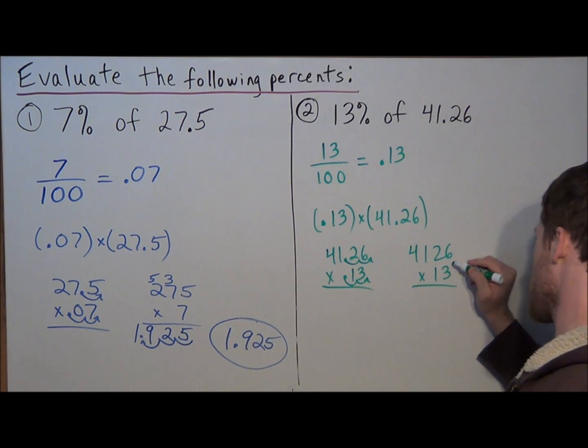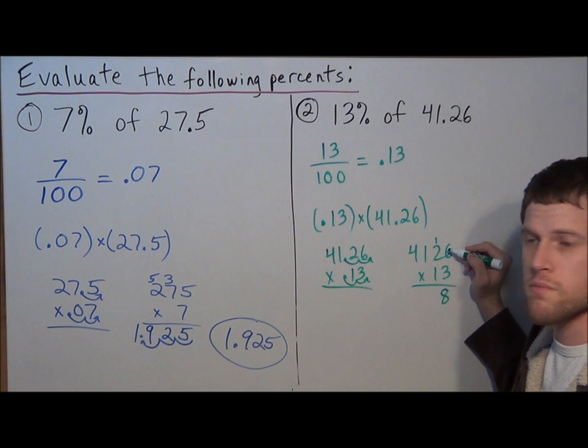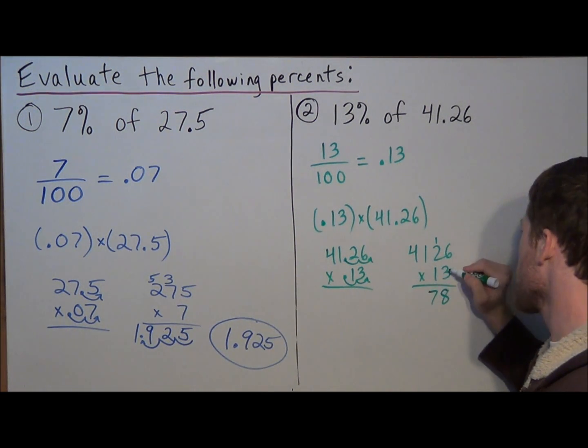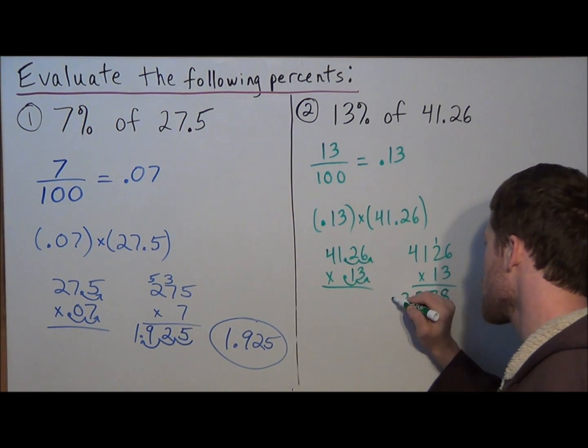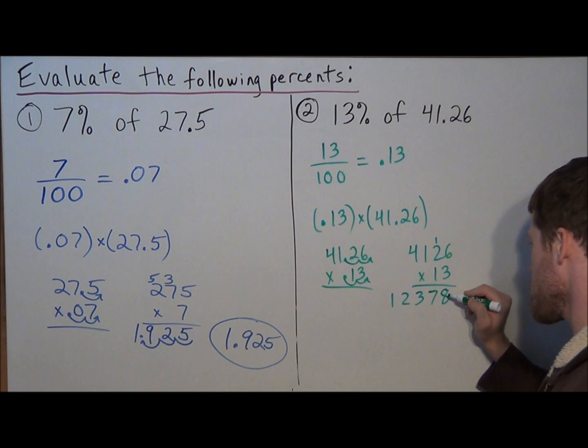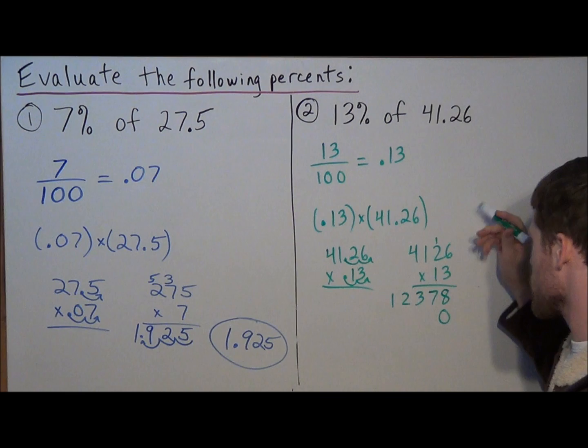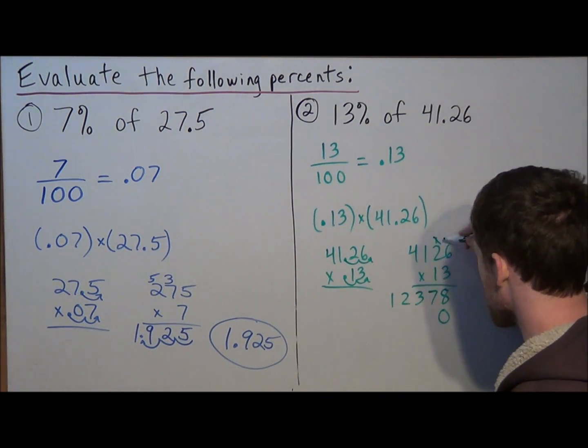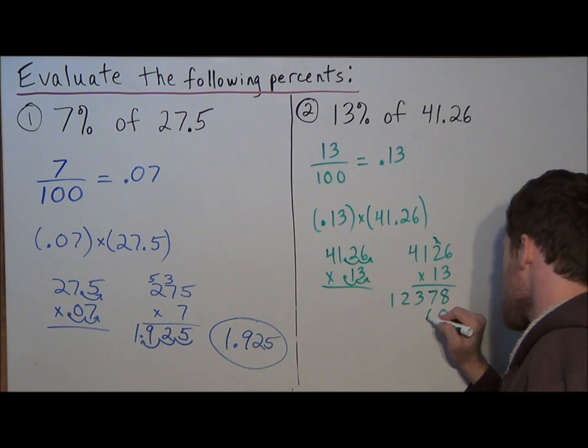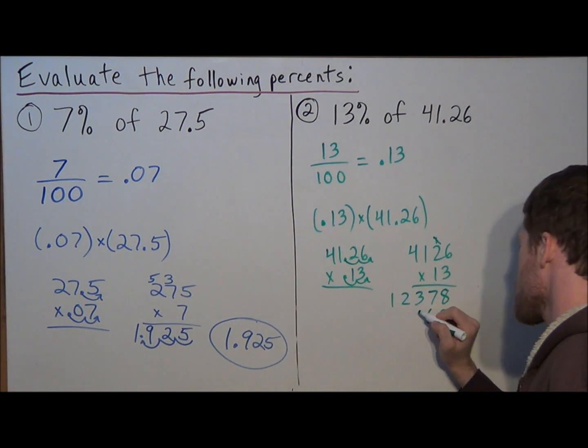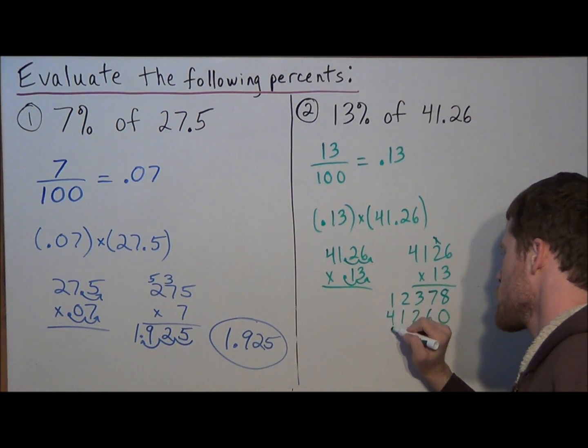So from this step, 3 times 6 is 18, we carry the 1. We have 3 times 2 is 6, 6 plus 1 is 7. Then we have 3 times 1 is 3, and 3 times 4 is 12. We have to put a space here. Since now we're multiplying from the tens place, we have to start in the tens place. We have 1 times 6, and we could cross out the numbers we carried so we don't accidentally add them a second time. So now we're doing 1 times 6 is 6, 1 times 2 is 2, 1 times 1 is 1, 1 times 4 is 4.